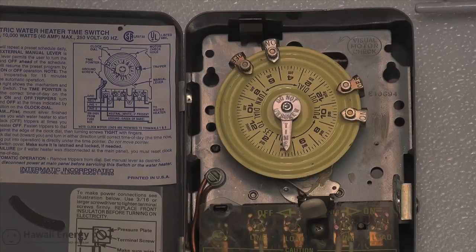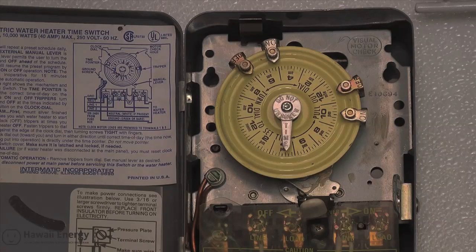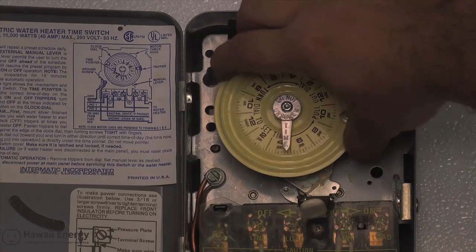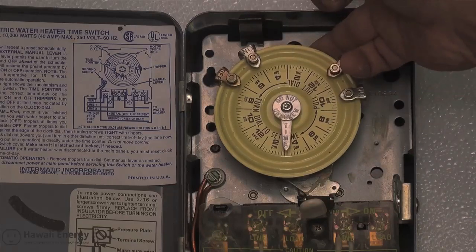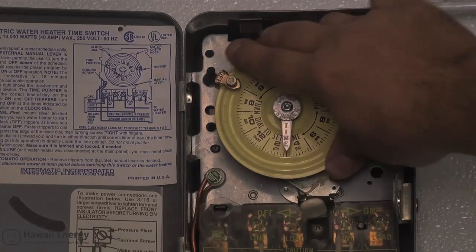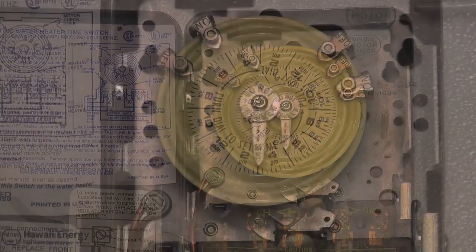With trippers fastened, be sure the clock is set to the current time. Setting the dial to the correct time is easy. Simply pull the entire dial toward you and rotate it clockwise or counterclockwise until the current time is directly under the silver time pointer. Here the time has been reset from 4:15 p.m. to 3 p.m.